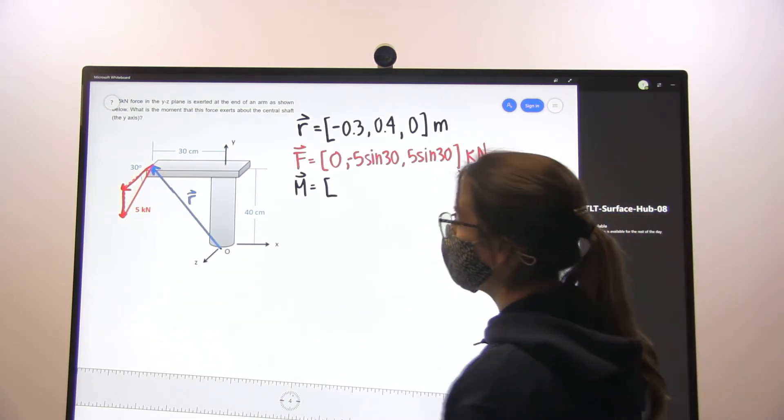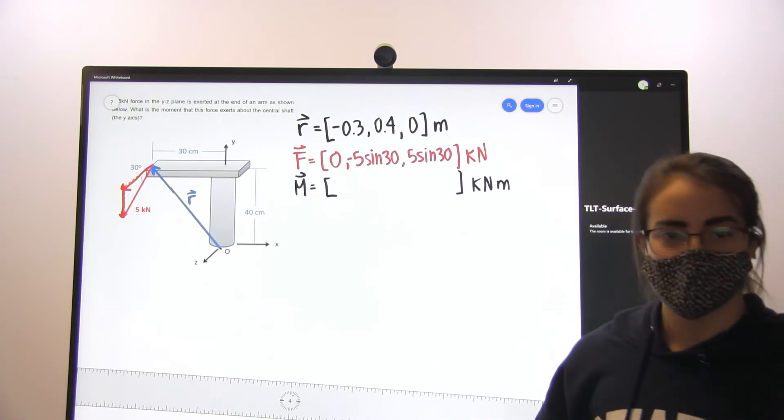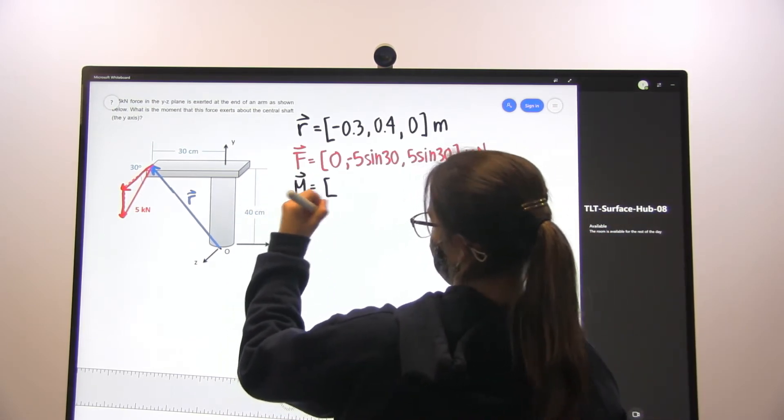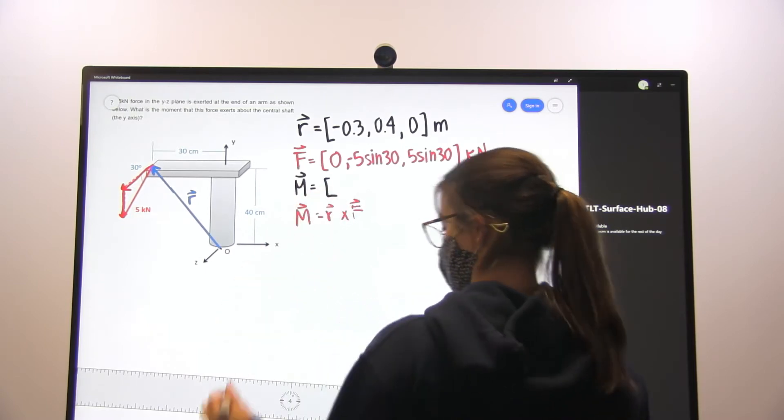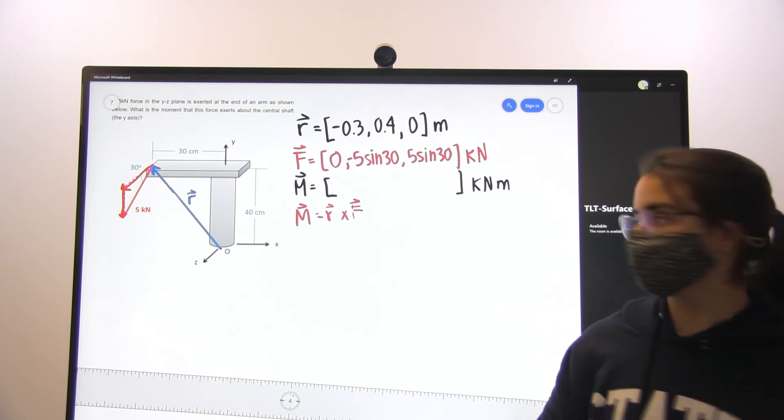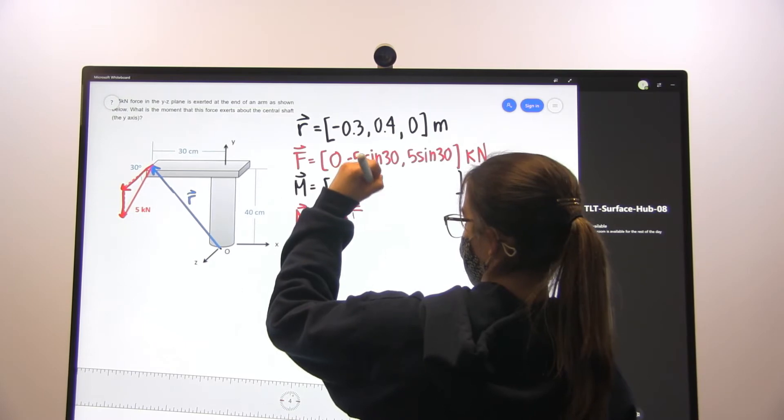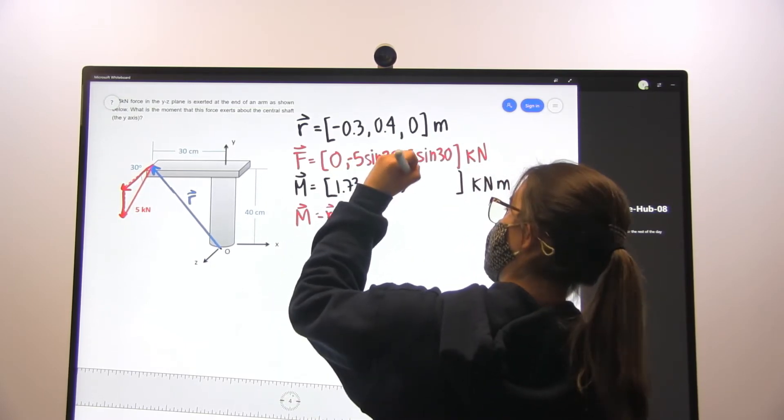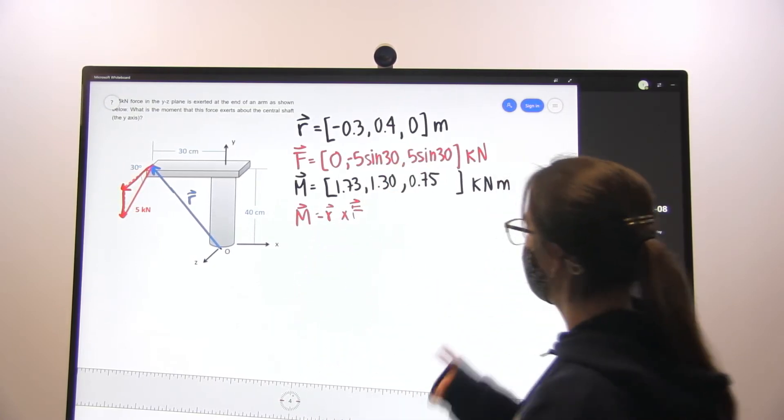So performing our moment, and that is by doing our cross product, which is basically m equals r cross f, that is going to give us a magnitude of our vector of 1.73 in the x-direction, 1.30 in the y-direction, and 0.75 in the z-direction.